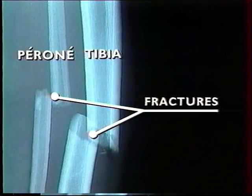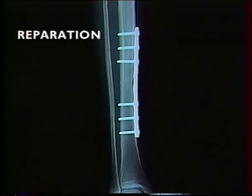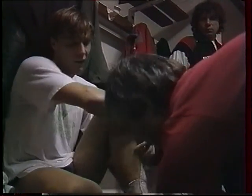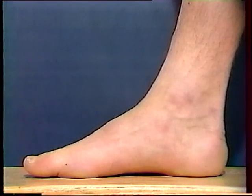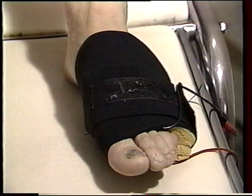Les radiographies montrent le caractère des fractures. Le traitement doit rétablir la continuité osseuse. Si tout se passe bien, le joueur peut reprendre le jeu après le plâtre et la rééducation. Les protèges tibias sont là comme remparts contre les chocs directs. Le pied peut subir des écrasements importants. Les radios révèlent parfois la fracture d'un orteil : un traitement local anti-inflammatoire et une protection adaptée permettent au joueur de tenir sa place dans le jeu.